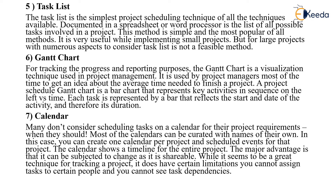The Gantt chart is used for tracking progress and reporting on the process. It is a visualization technique used in project management, helping project managers get an idea about the average time needed to finish a project. A Gantt chart is a bar chart that represents the key activities in sequence on the left versus steps. Each task is represented by a bar that reflects the start and end date of the activity and therefore its duration.